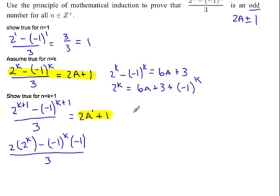Now we can substitute this big mess right here in for 2^k. So we have 2(6a plus 3 plus (-1)^k) minus... now negative 1 right here times a negative should give us plus (-1)^k, all over 3.